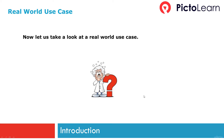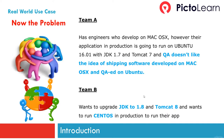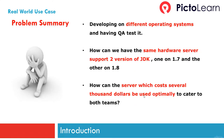Now let us take a look at a real-world use case. Let's say we have two teams, team A and team B, sharing the same infrastructure. In the past they used the same versions of JDK and Tomcat and exposed different ports. Now team A wants to develop on Mac OS X but run production on Ubuntu 16.01 with JDK 1.7 and Tomcat 7, and QA doesn't like shipping software developed on Mac and tested on Ubuntu.